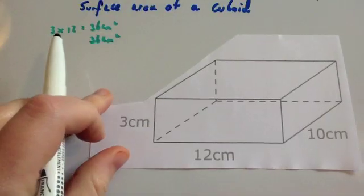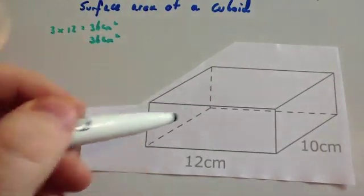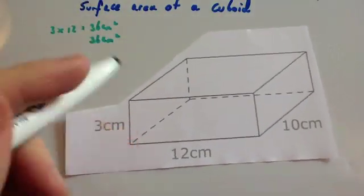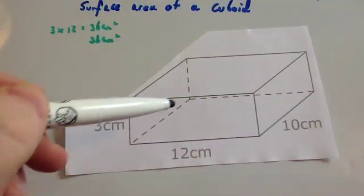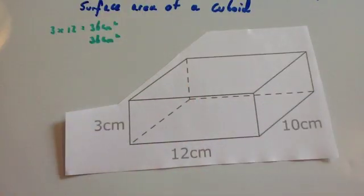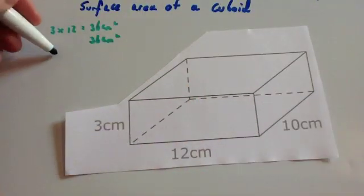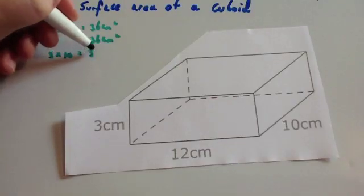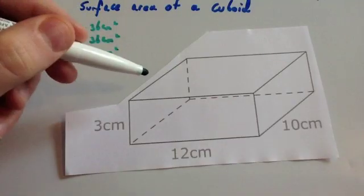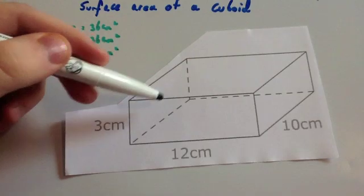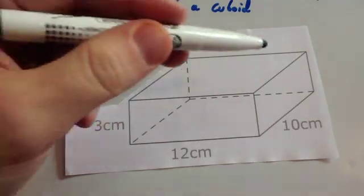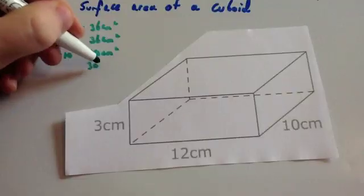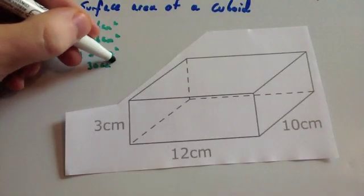The left hand side — this side here — it's three high and, looking at the length, it's going to be ten long. So it's going to be three times ten, which equals thirty centimetres squared. The right hand face would be exactly the same, so that's another thirty centimetres squared.